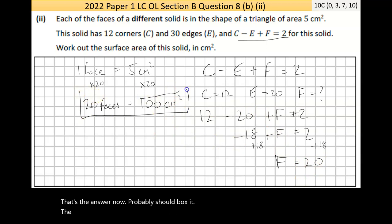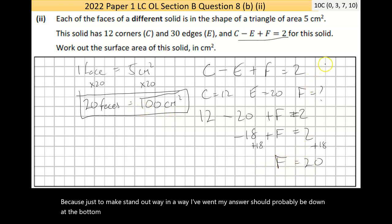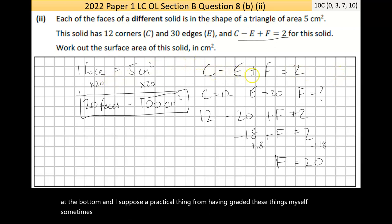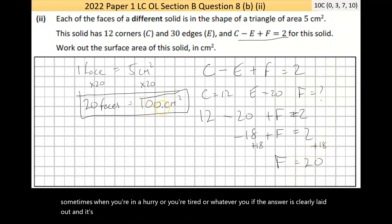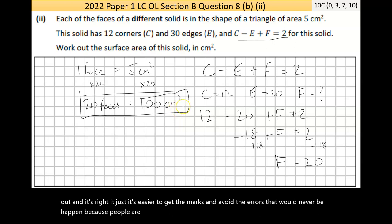Box the answer: 100cm². A practical tip — make your answer stand out clearly on the page. From experience marking these, when an answer is clearly laid out and correct, it's much easier to award the marks. That's 10 marks for Part B2.